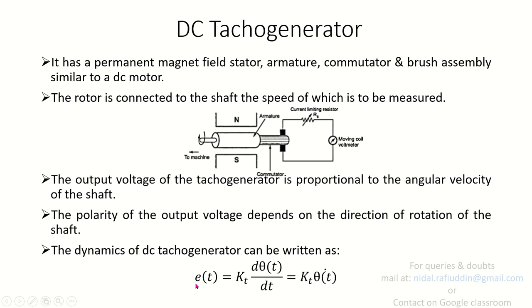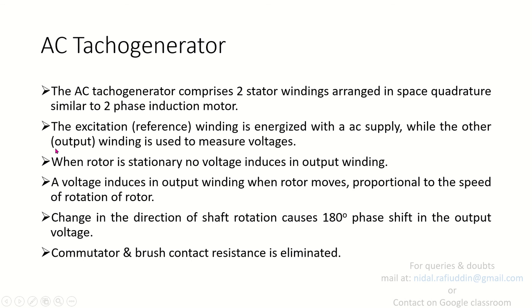Et is the voltage generated at the output side of the DC Tachogenerator. In case of the AC Tachogenerator, it comprises two stator windings arranged in space quadrature, similar to a two-phase induction motor.